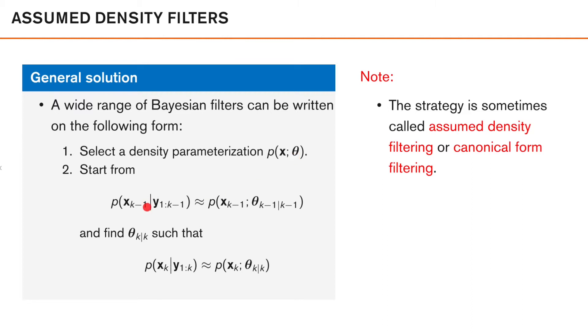To start the recursion, we assume that we have an approximation of the posterior from the previous time instance on our assumed density parameterization, where the shape of this approximation is described by theta at K minus 1 given measurements up to K minus 1. The aim is then to find the updated parameters theta K given K, such that our updated posterior can be approximated using the same type of density, but described using our updated parameters theta K given K. This strategy is sometimes called assumed density filtering or canonical form filtering, as we in each recursion assume that we can approximate our posterior density of a certain type using a specific set of parameters. In the Gaussian filtering case, we assume that the posterior can be described as a Gaussian density using its mean and covariance. But there are other alternatives.